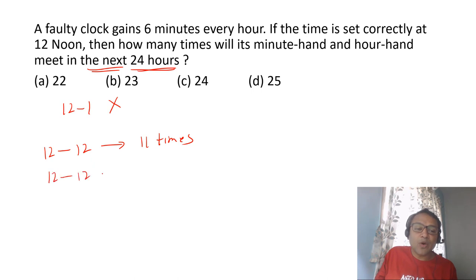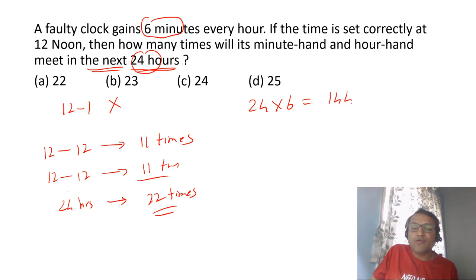Again, for the next 12 o'clock to 12 o'clock, they will meet 11 times. So basically, in 24 hours, they meet 22 times. I'm ignoring the first time when they meet, 12 o'clock, because they're saying next 24 hours. Now we are gaining six minutes every hour. So in 24 hours, you will gain 24 into 6, 144 minutes. 144 minutes is two hours and 24 minutes. So we know from 12 to 1, he will not meet. In one hour, he will not meet. But 1 to 2, he will meet once. And from 2 to 2:24, again, he will meet once. So we will meet two times extra.